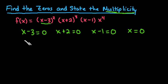So with this, we can see that x=3 is our first answer, x=-2, x=1, and then our last one is x=0. So this particular one has four zeros.